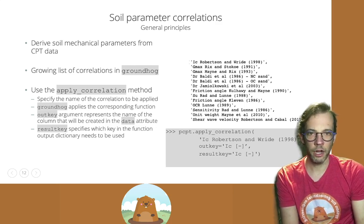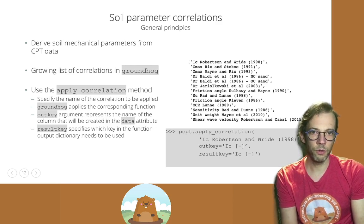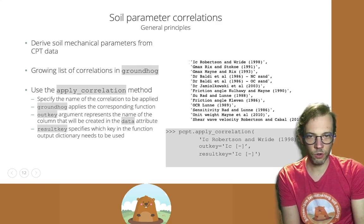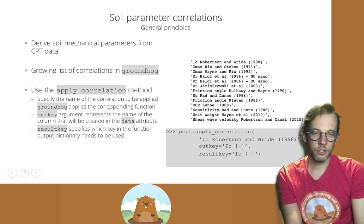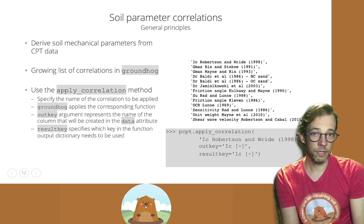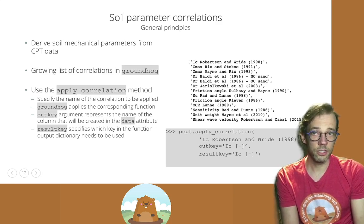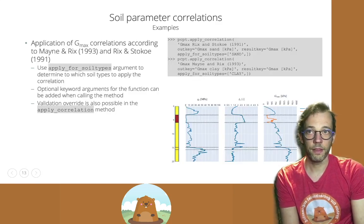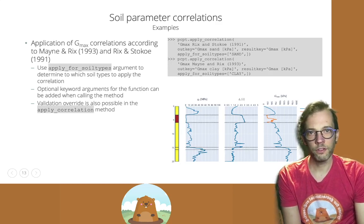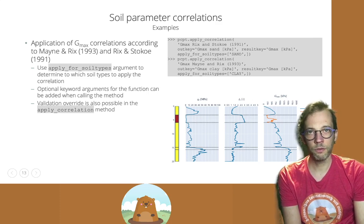The result of the function behind IC, Robertson and Wright is actually a dictionary, a Python dictionary. So we need to let groundhog know which key of the dictionary it needs to use to store in that output column. So that's why we also say that the result key is the key from that dictionary IC, which needs to be stored.